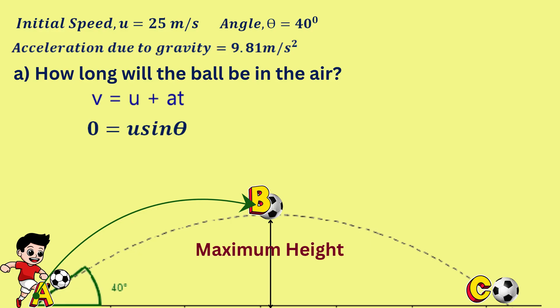The initial velocity, u, is always u times sine theta, since we are analyzing only the vertical component of the velocity. By the way, the horizontal component will always be u times cosine theta.